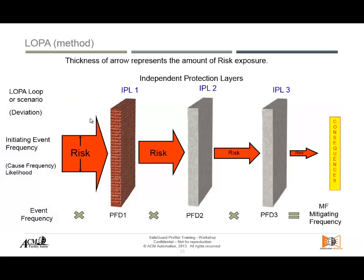Coming from the hazard analysis, the team will have already identified hazard scenarios. A hazard scenario starts with a deviation caused by a piece of equipment failing or an operator making a mistake. These will happen at certain frequencies or likelihoods over time — that's what we put in as our first factor in the equation to find our total mitigated frequency. If that event frequency is too high, the question becomes: too high with respect to what? With respect to a tolerable frequency.